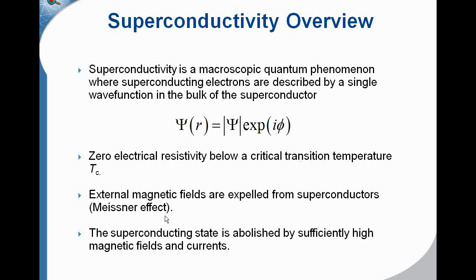In QuickField, we'll also be modeling the external magnetic fields that are expelled from superconductors. This is known as the Meissner effect. Also, the superconducting state is abolished by sufficiently high magnetic fields and currents, where we can model that using nonlinear BH characteristics in QuickField.